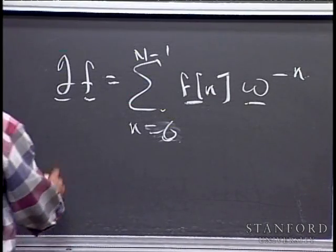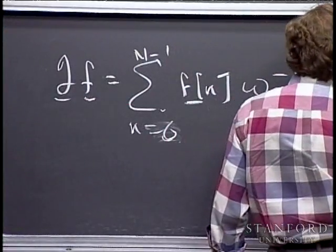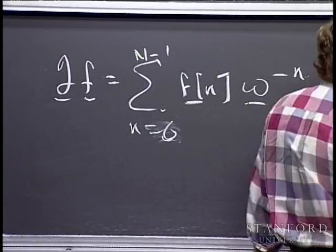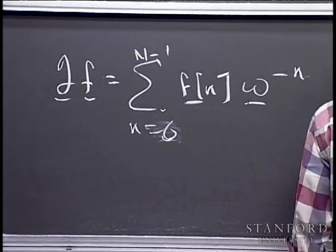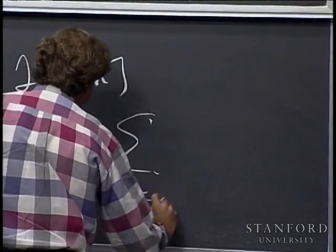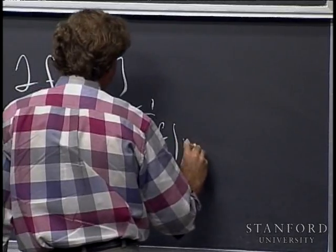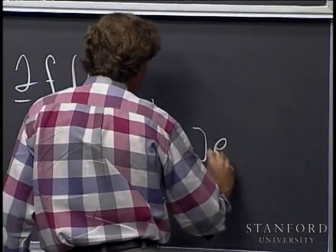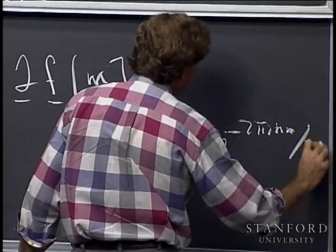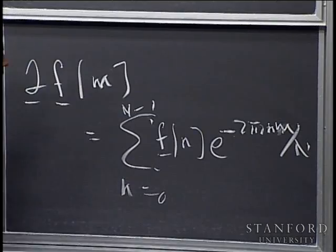The nth component of the Fourier transform is the sum from n equals 0 to N minus 1 of f_n times e to the minus 2 pi i nm over N. All right, we are set.